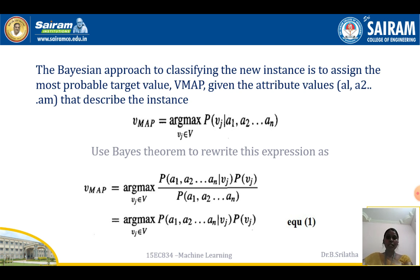By applying Bayes theorem, v_MAP equals argmax over v_j in V of P(a1, a2, ... an | v_j) times P(v_j), divided by P(a1, a2, ..., an). Since the denominator P(a1, a2, ..., an) is constant with respect to v_j, we can drop it, giving us equation number one from the Bayes classifier.